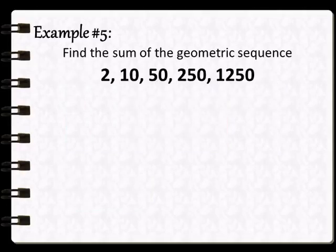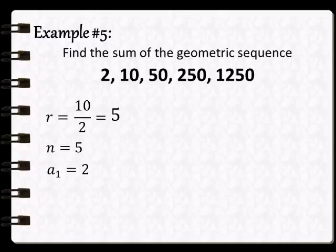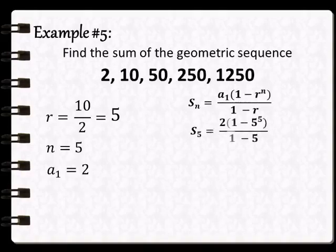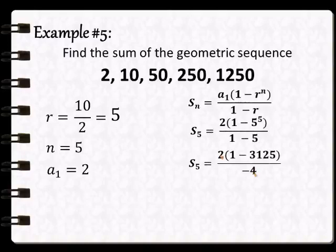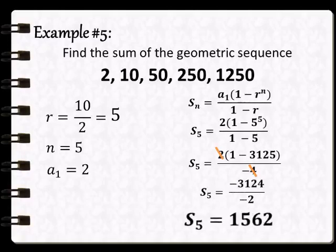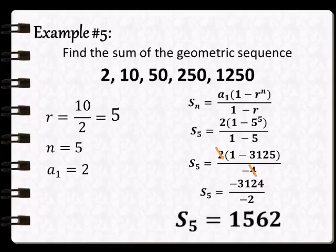Example number 5. Find the sum of the geometric sequence 10, 50, 250, and 1250. Kunin natin ulit yung mga kailangan na value o yung terms. Substitute natin ang mga ito sa formula ng geometric series. So, s sub 5 is equals to 1562.